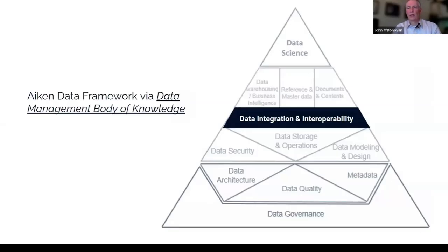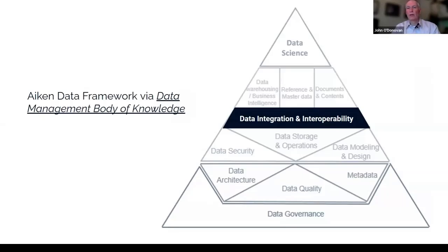I'll bring up the AIKEN framework as a visual context. This chapter is in the middle of the triangle. The dependencies underneath it — data security, data modeling, storage and operations platforms, data quality, data governance — provide the framework for implementing data integration. Above it is everything that it enables, such as data science, built on rails to move data around in a consistent, measurable framework.